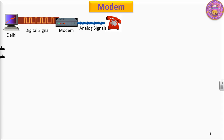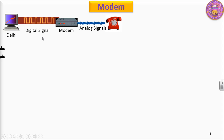But the problem is telephone wires carry analog signals, whereas the computer generates digital signals. So what we did — we started making use of one particular device: the modem. We connected this modem with the computer. The computer generates a digital signal, the signal reaches the modem, and the modem converts these signals to analog.